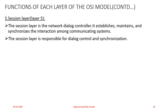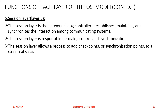The main function of the Session layer is that it is responsible for dialogue control and synchronization. By dialogue control, the Session layer allows two systems to enter into a dialogue. It allows the communication between two processes to take place in either half-duplex (one way at a time) or full-duplex (two-way communication) modes.